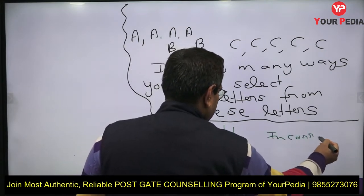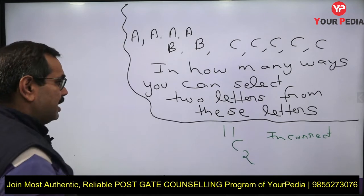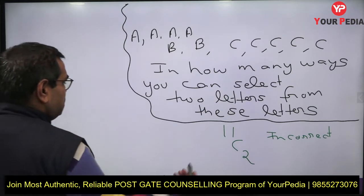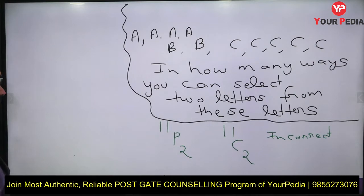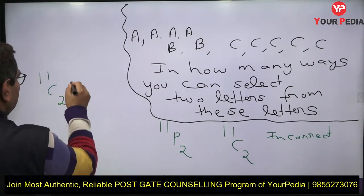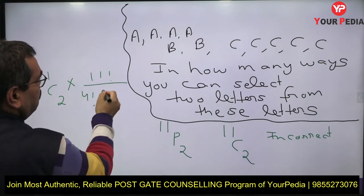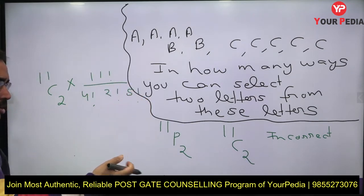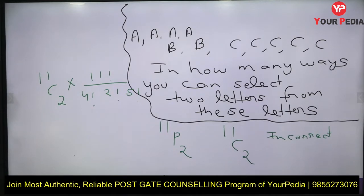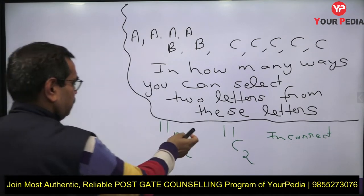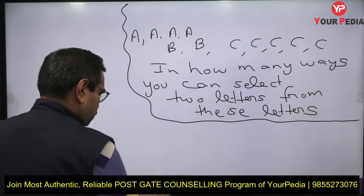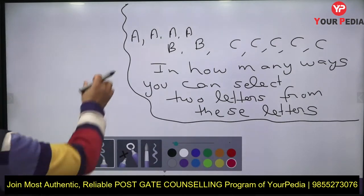Most students write 11C2 as the answer, but this is not the correct answer — it is incorrect. A few students answer 11P2, and some students answer 11C2 multiplied by 11 factorial divided by 4 factorial times 2 factorial times 5 factorial. In different ways they answer, and all these answers are actually incorrect. Now I will tell you what the correct answer is and what type of mistake most students make.